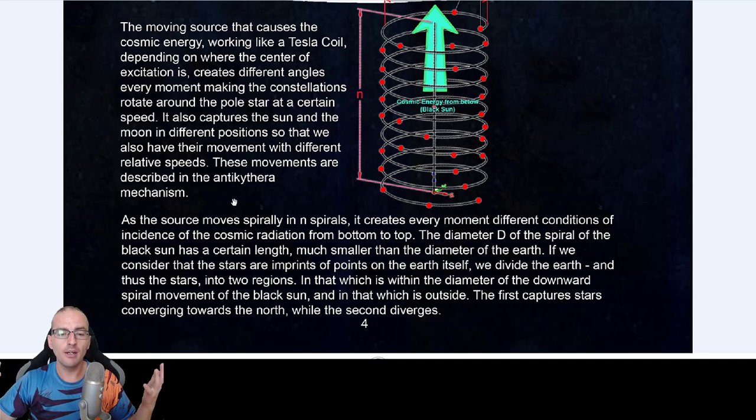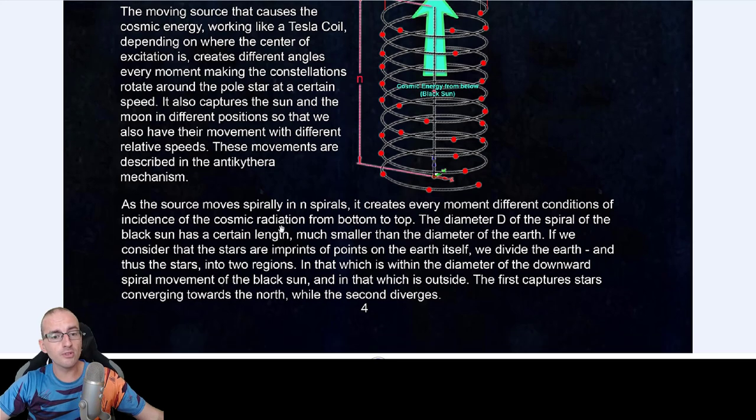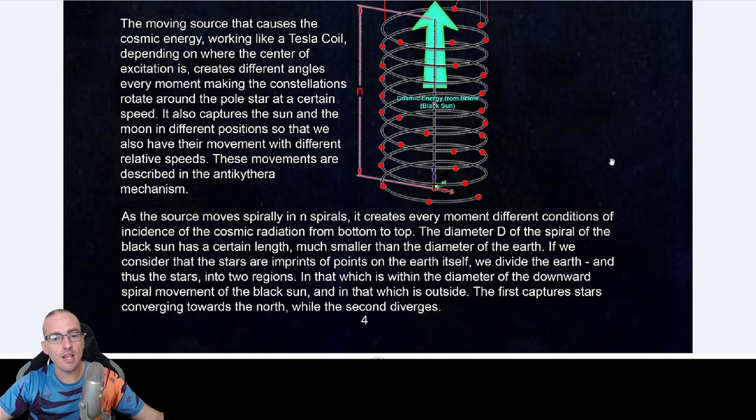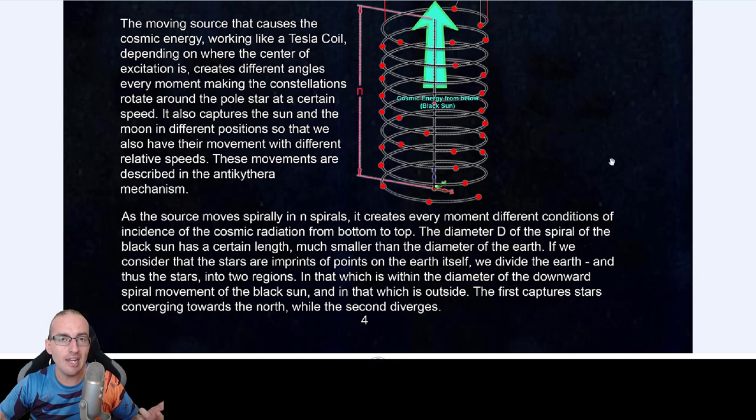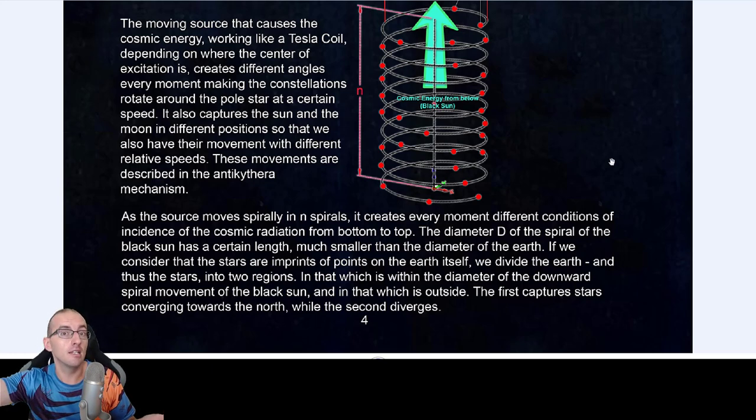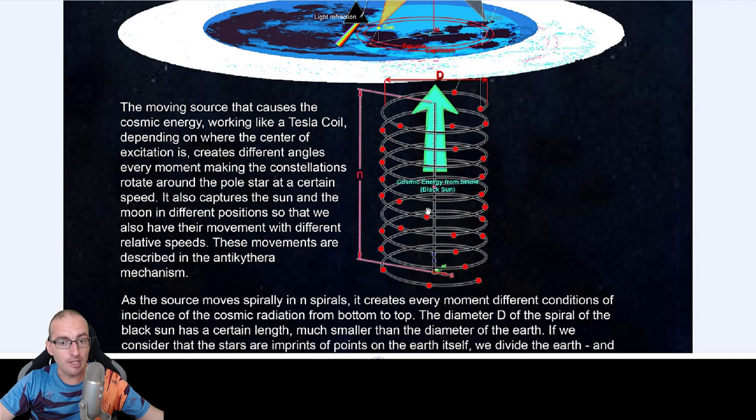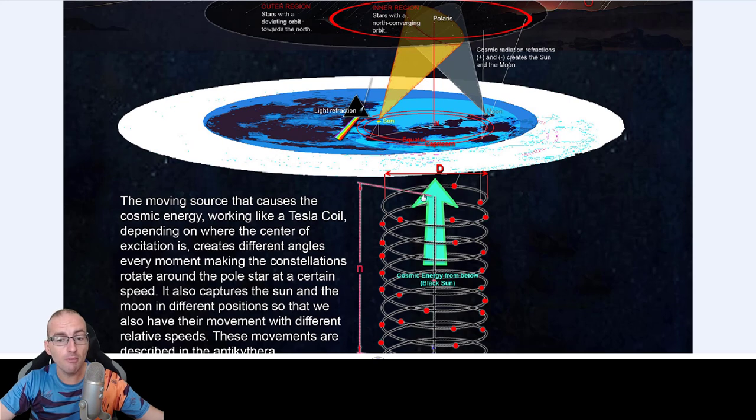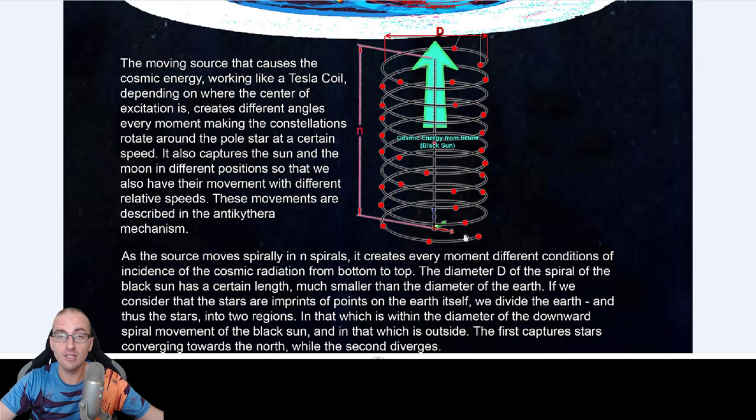We're going to talk about the Antikythera mechanism. Some YouTubers have covered it but from a very indoctrinated position and lack of information and lots of ignorance. As the source moves spirally in N spirals, you see here the source of the black sun diameter and the spirals, it creates every moment different conditions of incidence, the angle of incidence of that radiation. It's electromagnetic, therefore it's radiation. The sun is radiation as well. The diameter d of the spiral of the black sun has a certain length, much smaller than the diameter of the earth. You can see here the diameter of the moving black sun is smaller. So it moves all the time. That's why it creates the dynamic field and that's why you see the stars so differently.